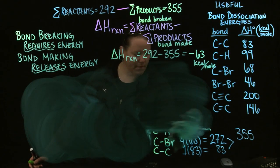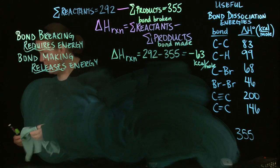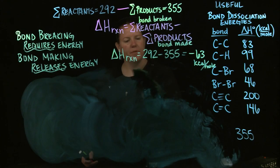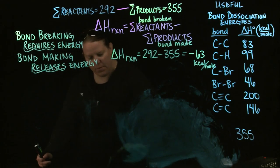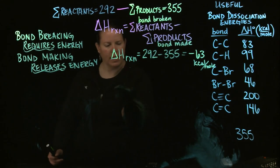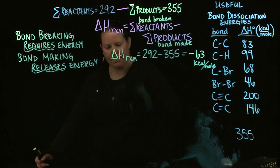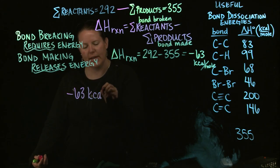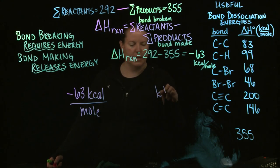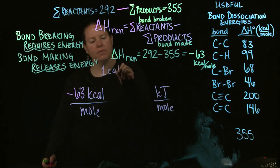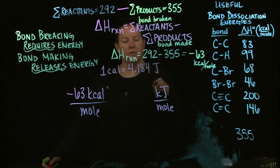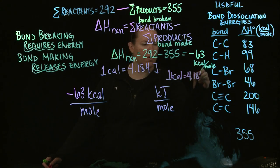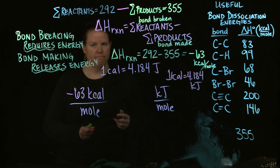And realize that if the conversion factor between joules and calories, if my conversion factor, if one calorie is equal to 4.184 joules, then guess what? One kilocalorie is also going to be equal to 4.184 kilojoules. You just are basically multiplying both of those by 1,000.